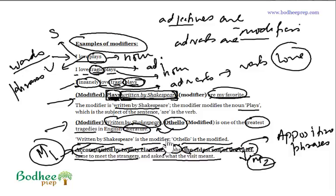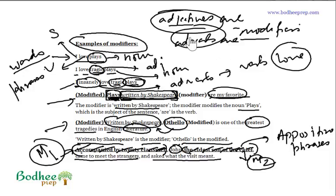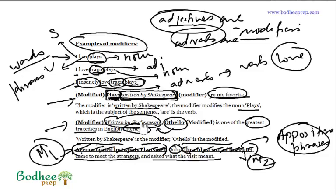So what do we learn here? Modifiers can be as simple as adjectives and adverbs, but they can also be more complicated. A modifier can be an appositive phrase or a participle phrase. Modifiers can be of many kinds, and in these examples we've seen the different kinds of modifiers.